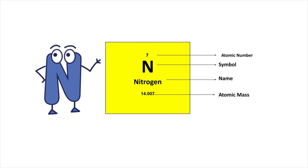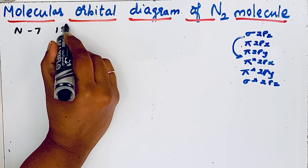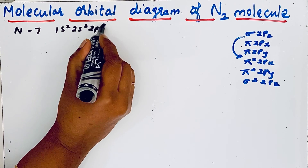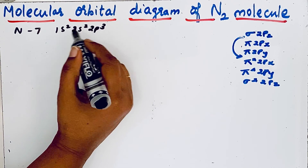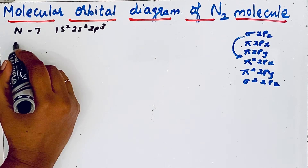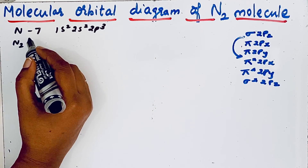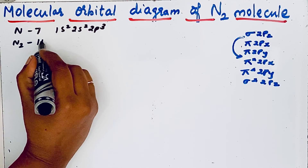Nitrogen's atomic number is 7. We can write the electronic configuration for a nitrogen atom as 1s2, 2s2, 2p3. When two nitrogen atoms combine we get the nitrogen molecule, so the number of electrons present in the nitrogen molecule must be 14.